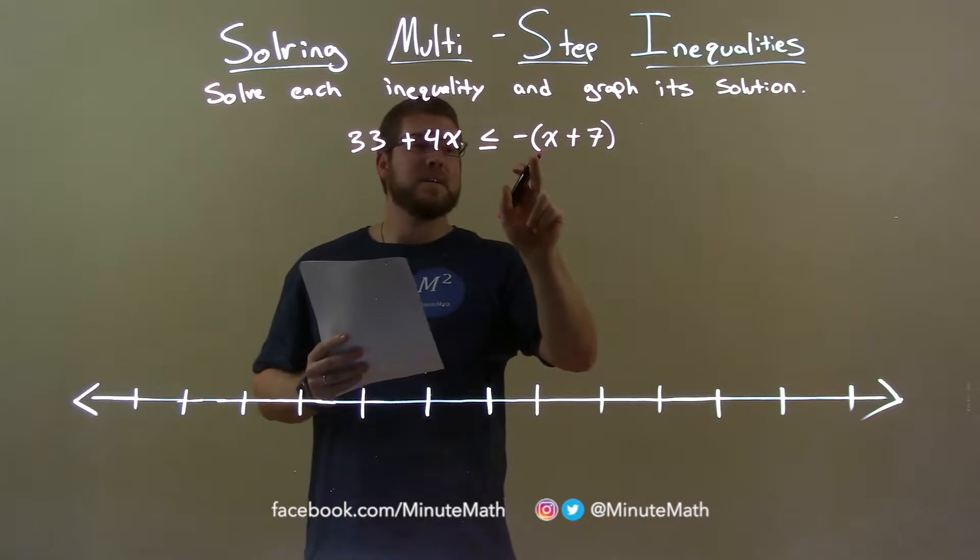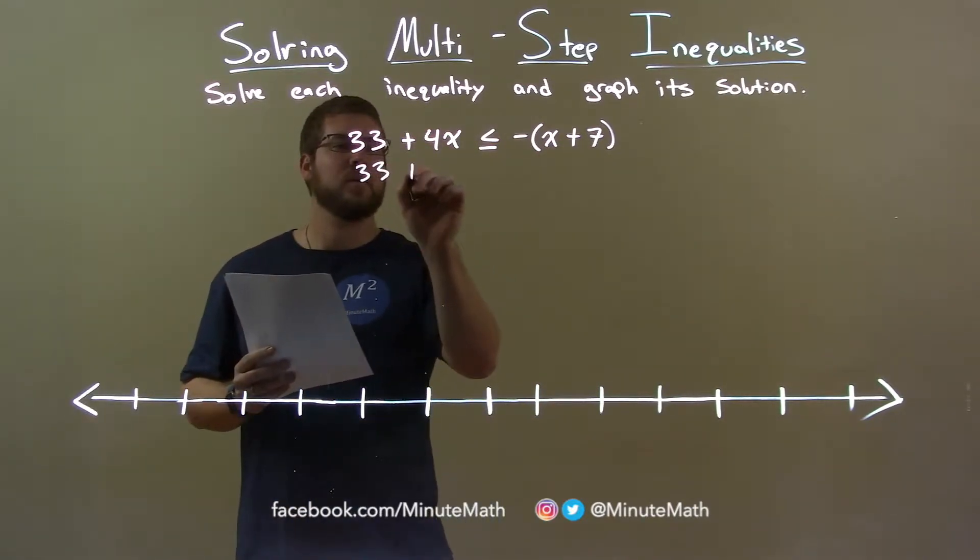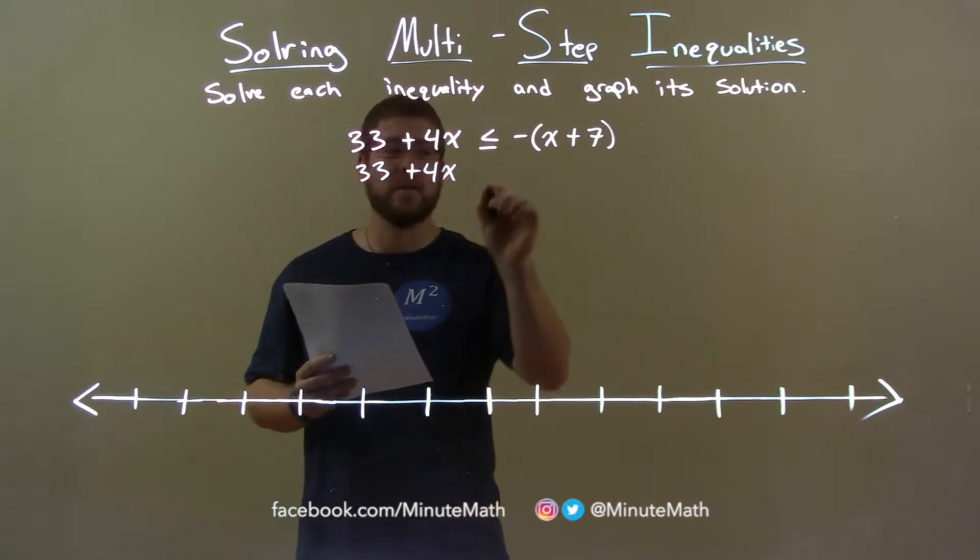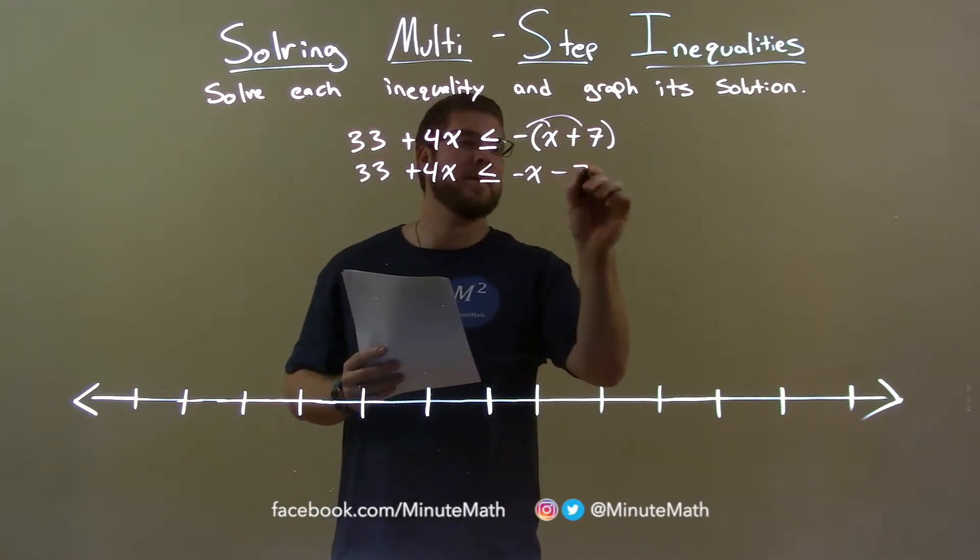First thing I want to do is I'm actually going to distribute this negative into that parenthesis. So, 33 plus 4x stays where it is on the left. Negative goes in, negative x, and then negative times 7 is minus 7 here.